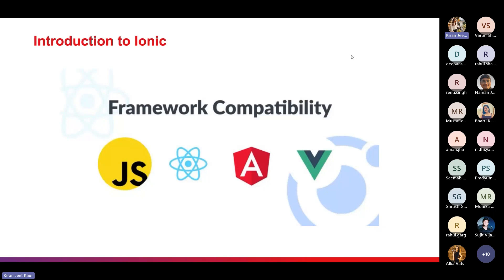Ionic is cross-platform, working on native iOS, Android, and web. It is also web standard based — built on standard web technologies: HTML, CSS, and JavaScript. It has a beautiful design; the Ionic components are very easy to integrate within your application, and anyone with web development skills can easily access it. It is also open source.